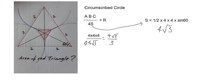We now know the circumscribed circle radius. The length from the intersection between the red triangle and the blue circle is 2, because that is the radius of the smaller circle.